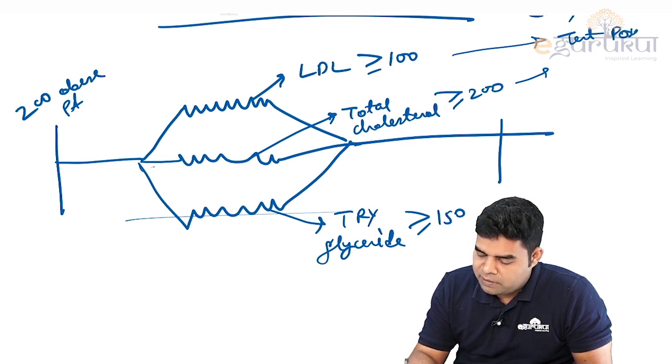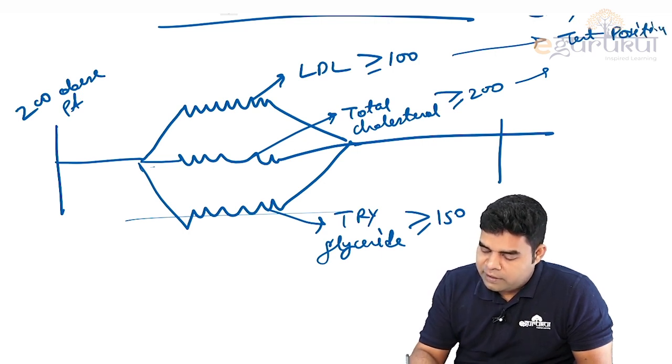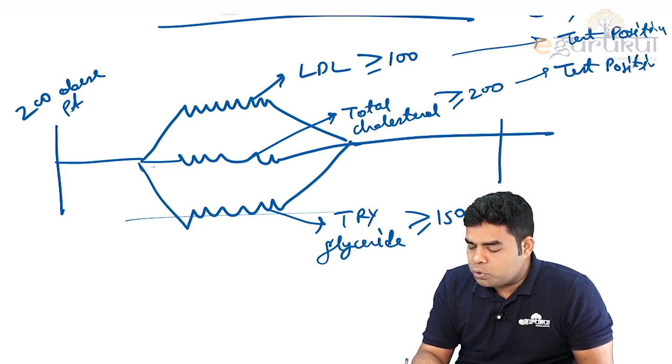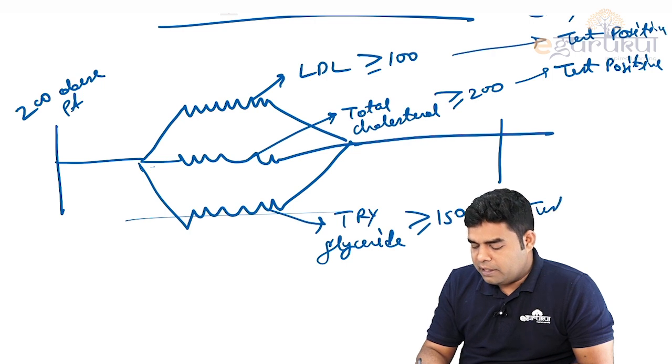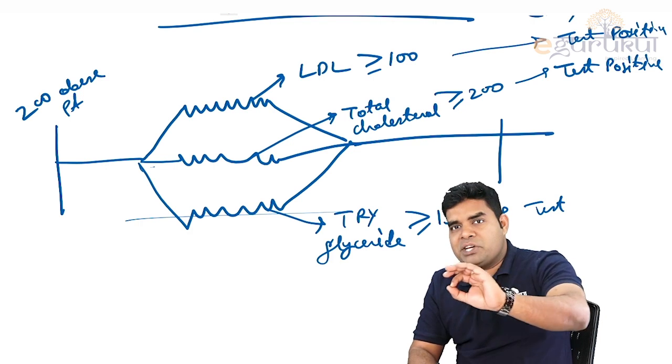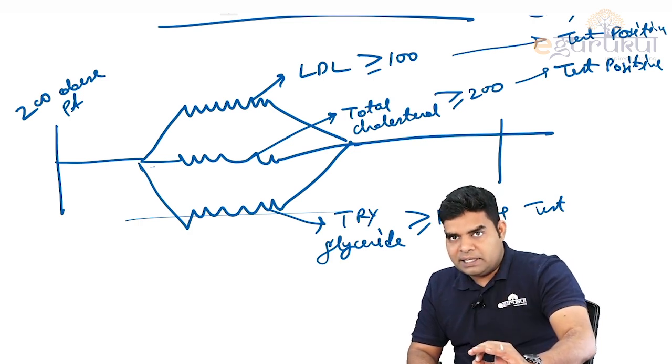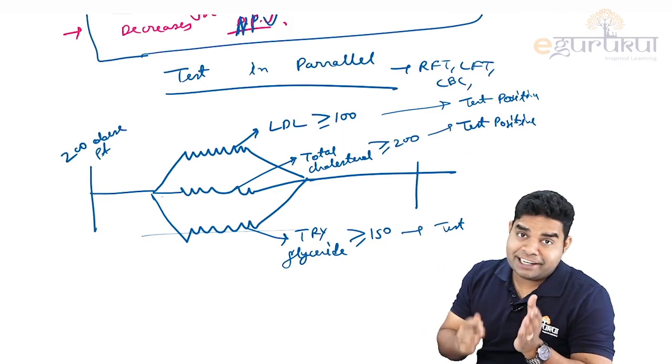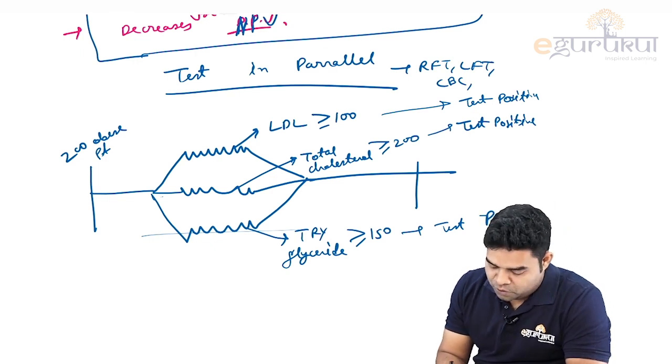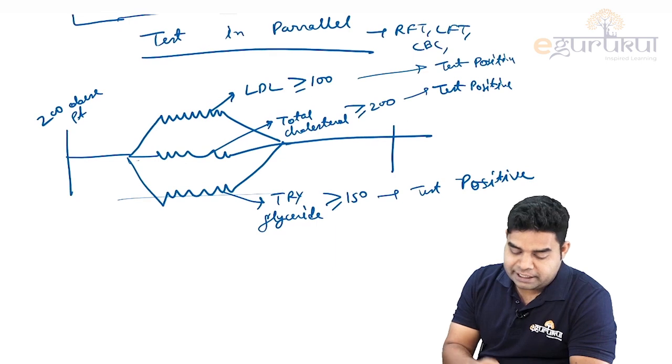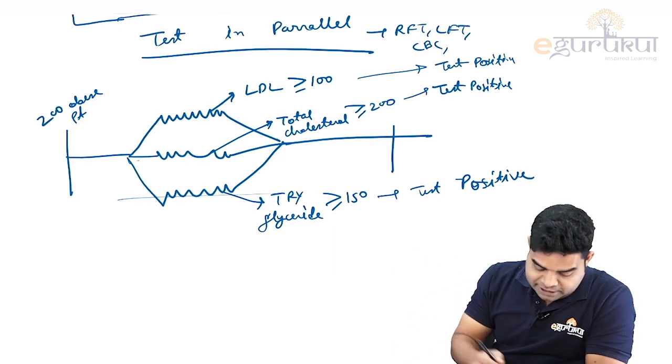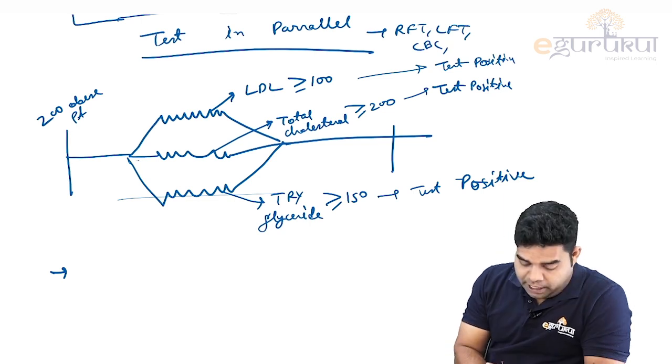Test in parallel means we do two or three tests at the same time, and if any test result is increased or raised, then the patient is declared to have the disease. If any indicator is positive, the test result will be positive.